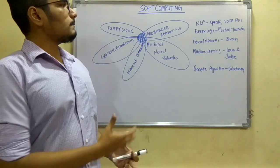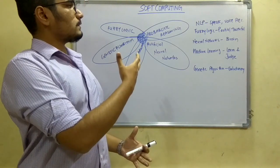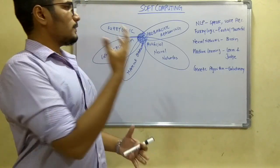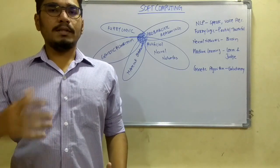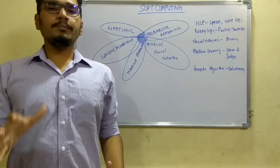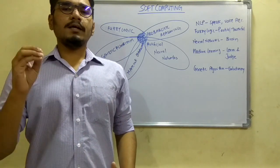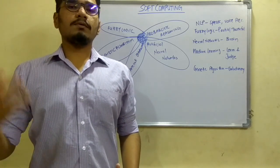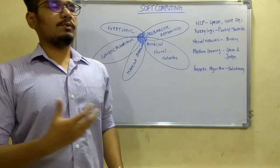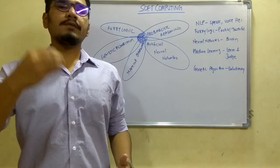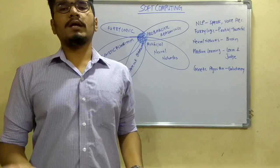So what is soft computing? Before starting, you may get confused that it could be 'software computing' — but that's not the case. Soft computing and software computing are different things. Soft computing is basically computing inspired by neural networks, the neurons of the brain in human beings. And if there is a term called soft computing, there is obviously a term called hard computing.